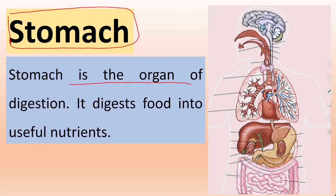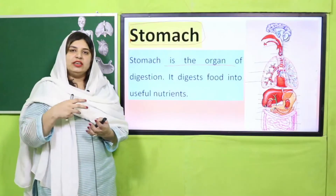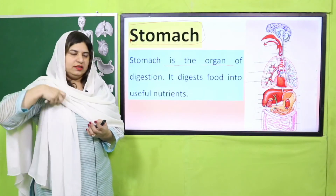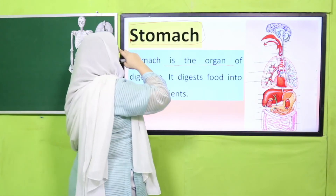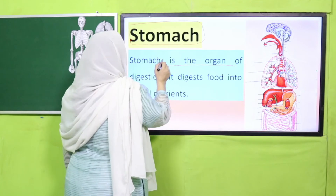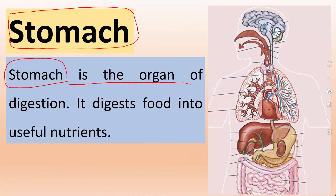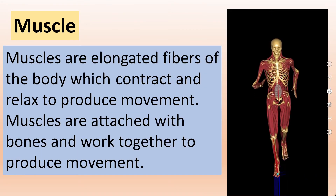Next is stomach. Stomach is the organ of digestion. The food we eat should be crushed down into smaller pieces. That food is crushed down in the stomach. The stomach is the organ where larger food particles get crushed to their simplest form and are converted into useful nutrients.